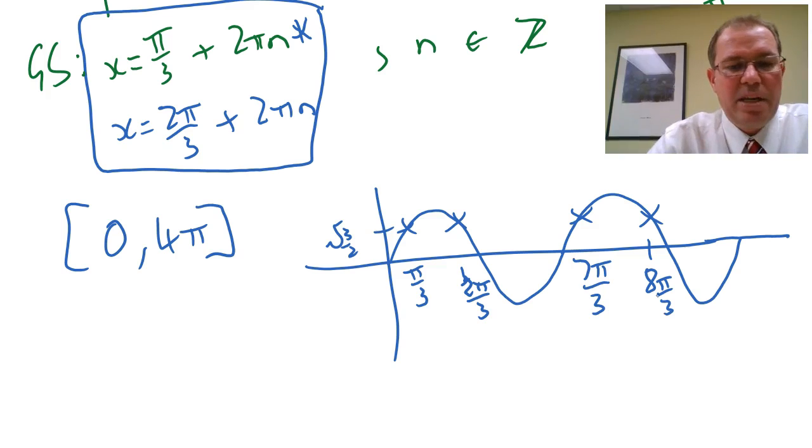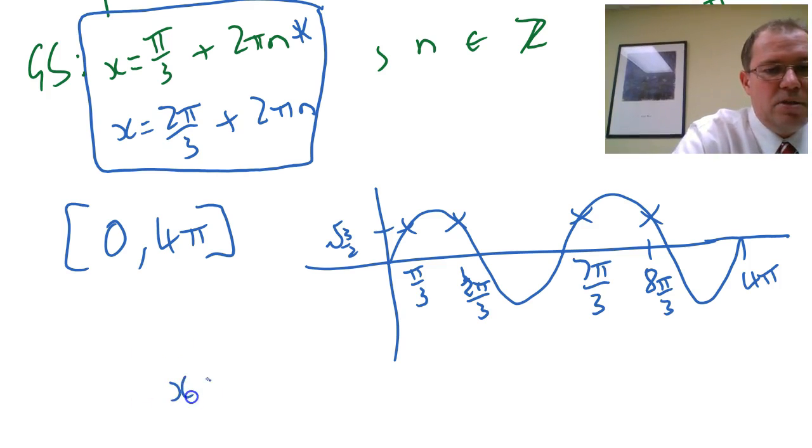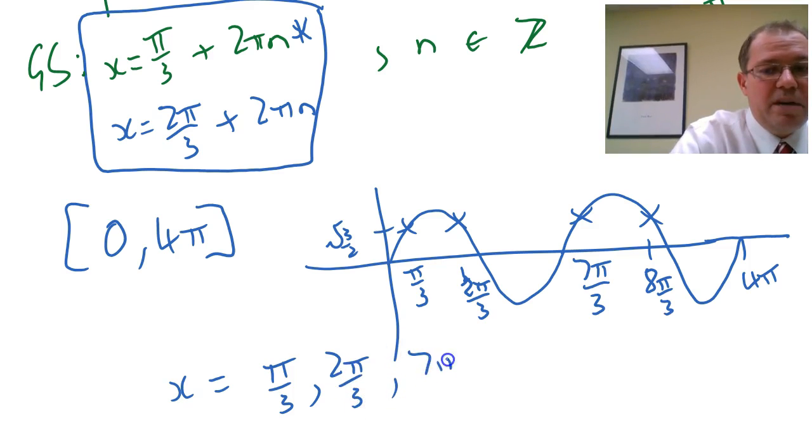If I put n equals 2 in it's going to be outside my range of 4π—they'll be too big. So I've got four final answers which I'll write down: π over 3, 2π over 3, 7π over 3, and 8π over 3.